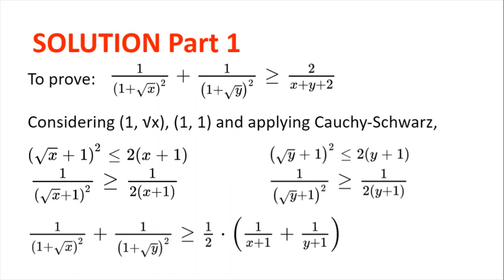Now, because we know that x and y are positive reals, we can divide both sides by (square root of x plus 1) squared and by 2(x plus 1) without changing the inequality sign. So we get 1 divided by (square root of x plus 1) squared greater than or equal to 1 divided by 2(x plus 1). The same goes for the y term: 1 divided by (square root of y plus 1) squared is greater than or equal to 1 divided by 2(y plus 1).